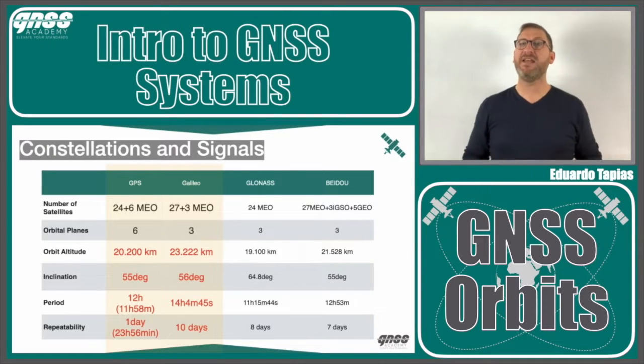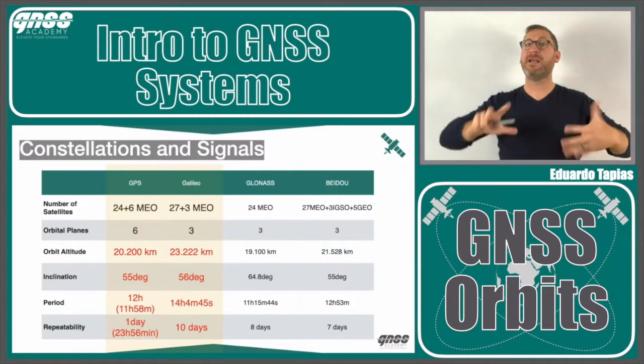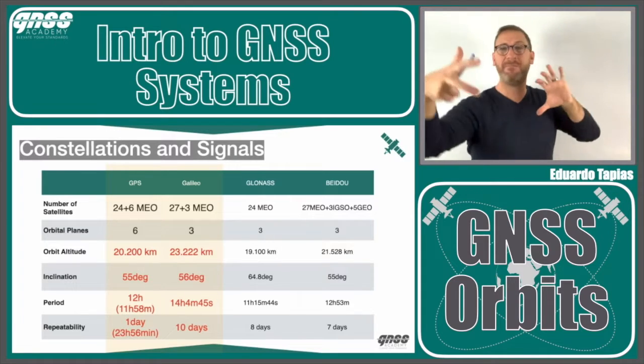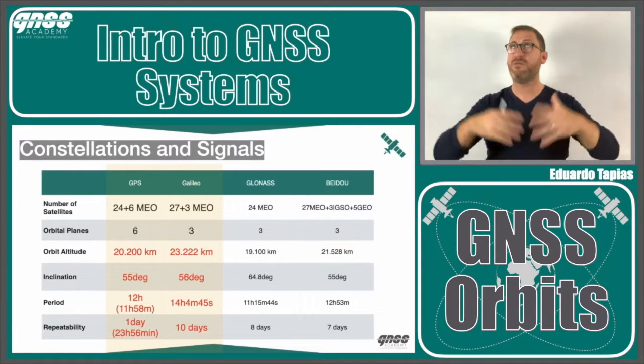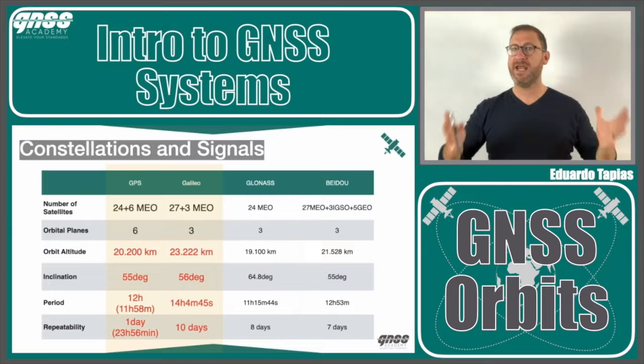This is very interesting because it means the global GPS constellation is repeatable every 24 hours. You will find exactly the same satellites with the same geometry every day.